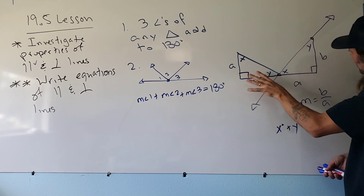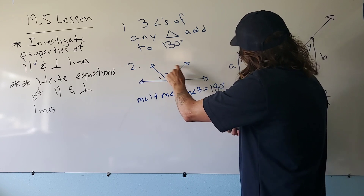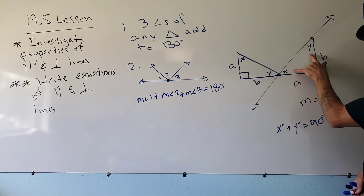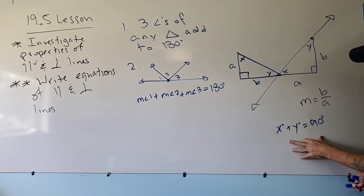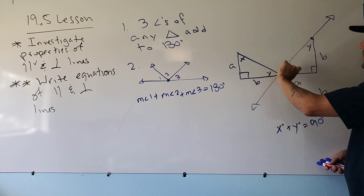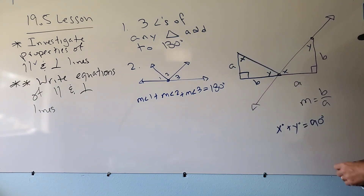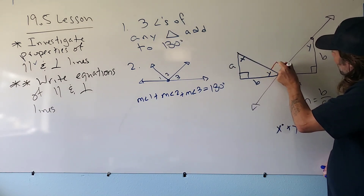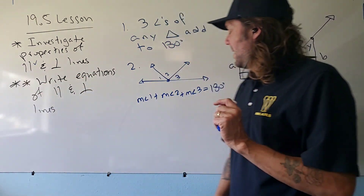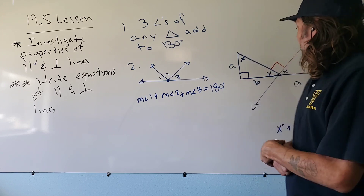We saw that the original line had a slope of B over A. We made an identical triangle and placed it next to the first. Now notice I have a straight angle here, and I know my three angles must add up to 180 degrees. Since angles X and Y together are 90 degrees, the remaining angle here is forced to be a right angle. I've built perpendicular lines, and I can clearly observe the relationship between their slopes.